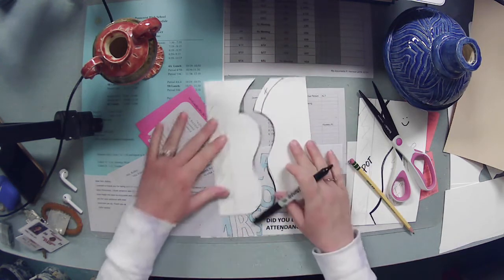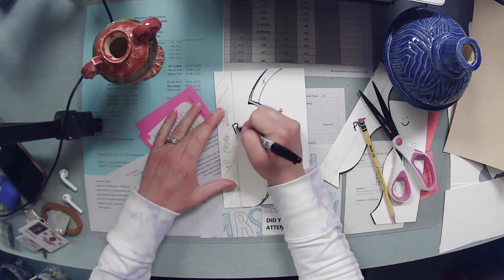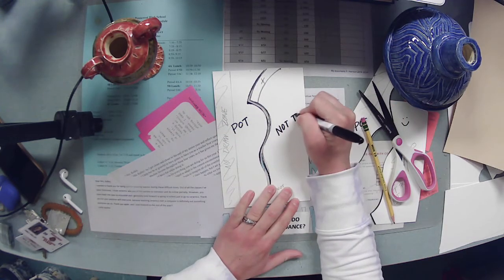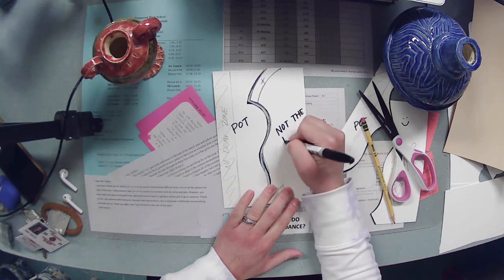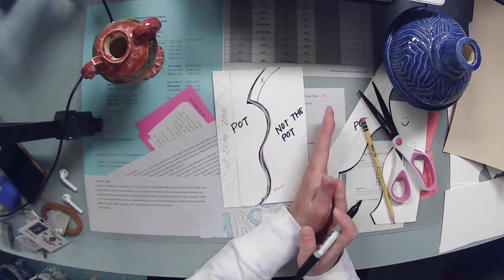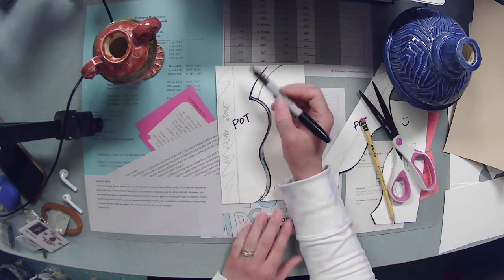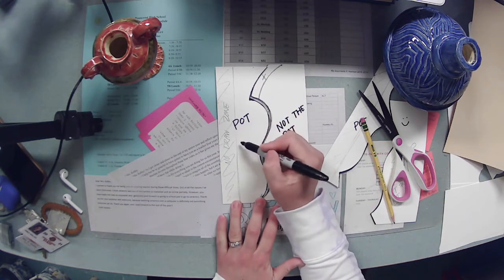So to clarify this is the pot, this is not the pot. If you're a lefty and you do this reverse like on the other side you just reverse them. Wherever you put your no draw zone, this is the pot, not the pot.